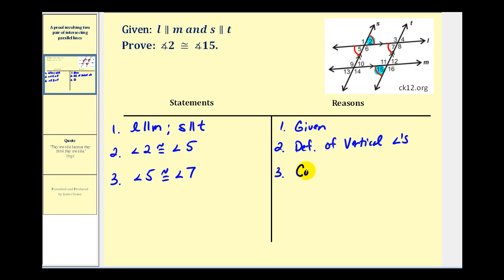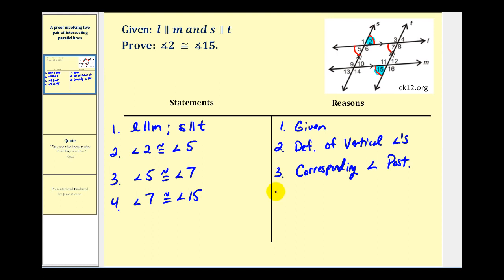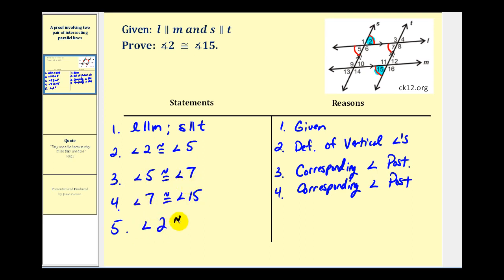This is from the corresponding angle postulate. And then for the same reason, angle seven and angle 15 are congruent by the corresponding angle postulate, using the parallel lines L and M cut by transversal T. Now by the transitive property: angle two is congruent to angle five, angle five is congruent to angle seven, and angle seven is congruent to angle 15 — therefore, angle two is congruent to angle 15.